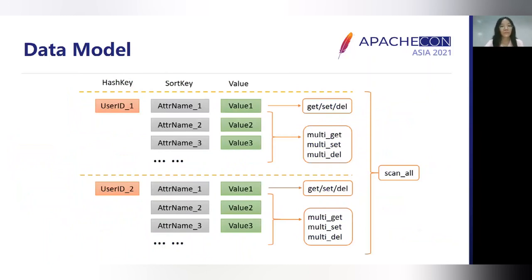For the data model, PEXUS is a key-value storage that supports two-level data. The hash key is used for partitioning, and each hash key can have several sort keys. Sort keys are sorted in byte order. This design provides wider use cases and supports atomic multi-get, multi-set, and multi-delete for reading, writing, and deleting several values under the same hash key.